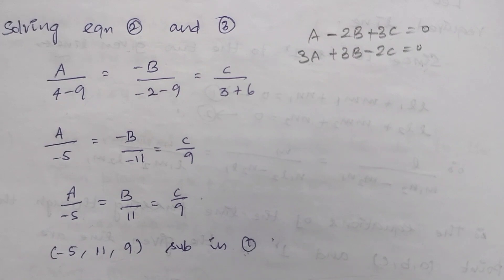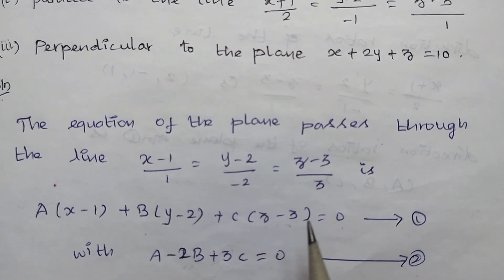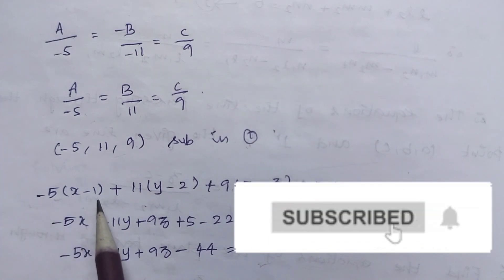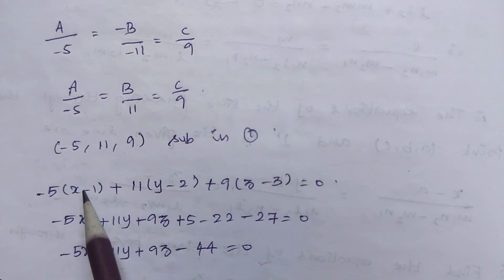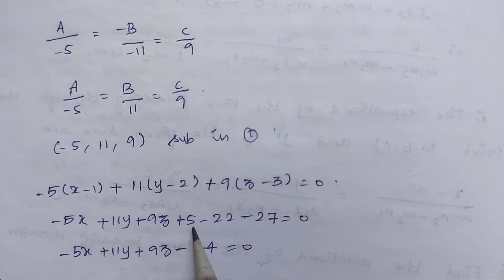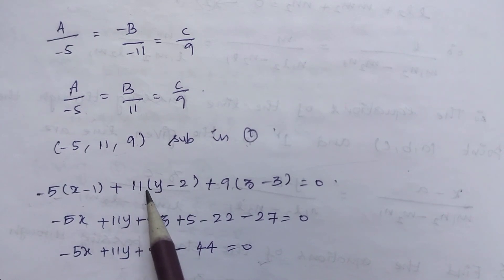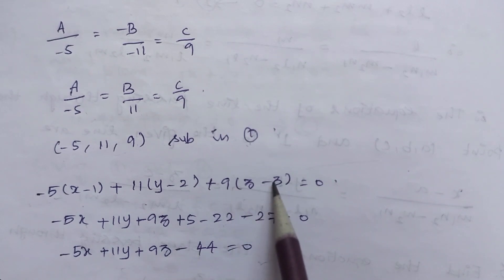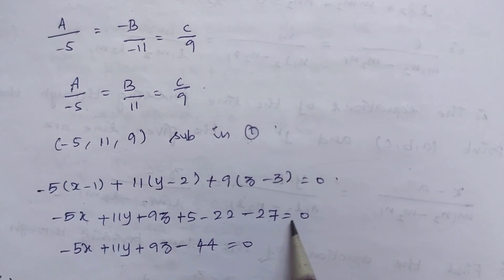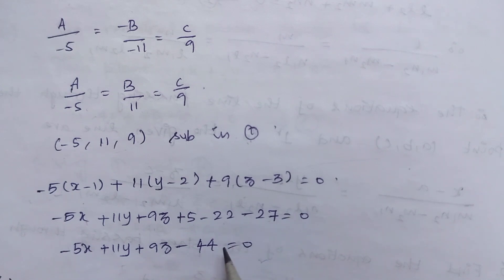Substituting into equation 1: -5(x-1) + 11(y-2) + 9(z-3) = 0. Expanding and simplifying: -5x + 11y + 9z - 44 = 0. This is the required plane equation for Subdivision 1.